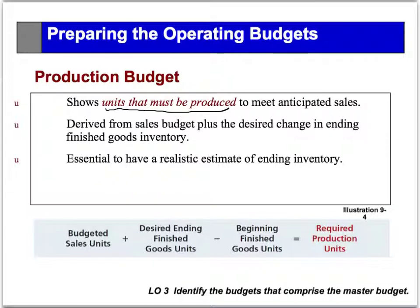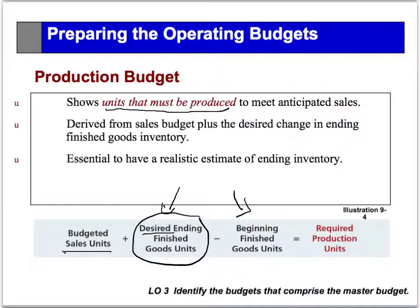This is based on what the salespeople said they think they're going to sell each quarter. We take what they say we're going to sell that month, but we have to introduce a certain thing here. Because we're talking inventory, we have to have ending inventory, and we are starting off with some beginning inventory. This desired ending inventory is management's policy — they want to have a certain percentage of what we need to sell next month as ending inventory in this month.